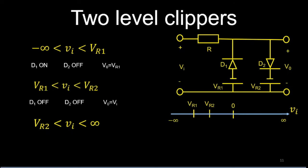In the second interval (vr1 < vi < vr2): both diodes are off. D1 is off because vi > vr1 makes the n-side potential of D1 greater than the p-side. D2 is off because vi < vr2 makes the p-side potential of D2 less than the n-side. With both diodes open, no current through R, so output equals input voltage.